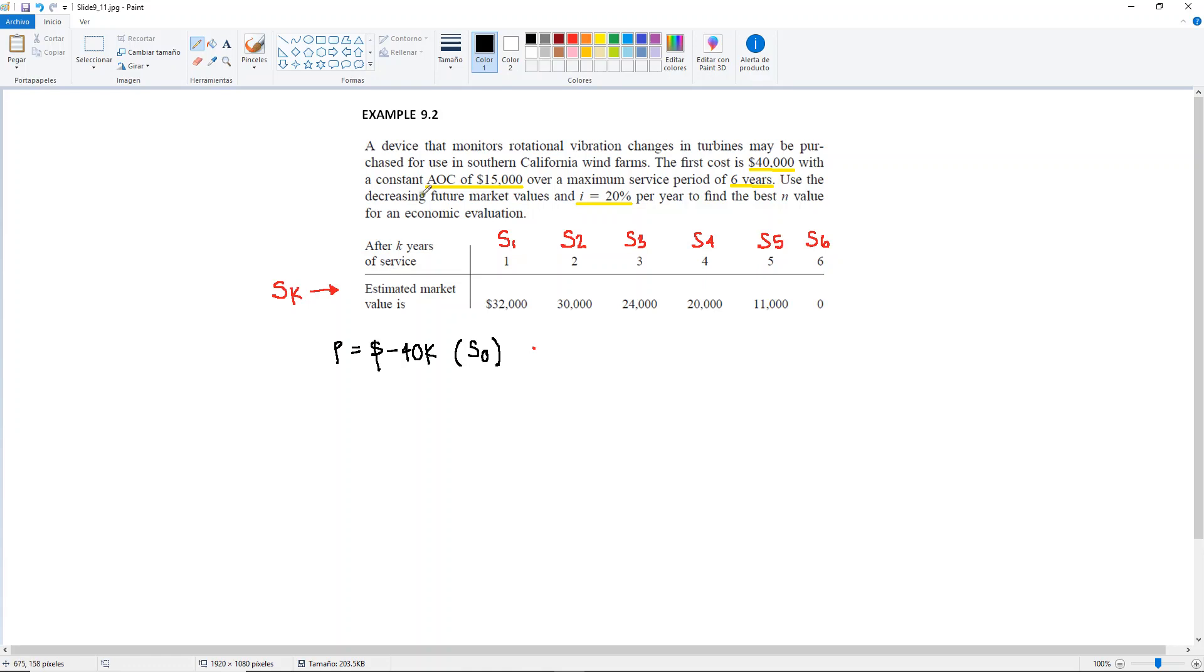And then it says here that we have an annual operating cost of minus $15,000. The good news here is that it says that it's constant, meaning that it's uniform. And that this is already the annual worth. So there's no need to convert this because we have the same amount every year. And you may refer to case one of the previous video.